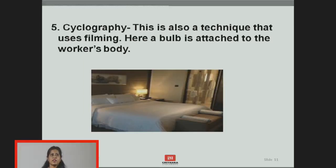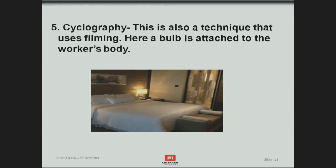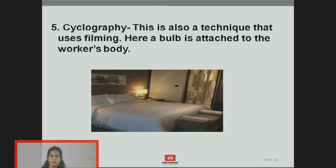The fifth technique is cyclography. In this technique, a bulb is attached to a worker's body — to the hands, legs, or back — and the movements during activities are highlighted and captured using slow photography. The analysis of the complete film records the rhythmic steps and eliminates any unnecessary steps.